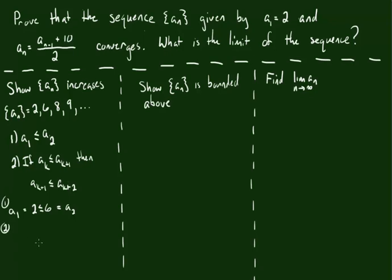So there's step 1 taken care of for us. Next up, step 2. What we're going to need to do with step 2 is we're going to need to assume that a_k is less than or equal to a_{k+1}, and then show that forces us to realize that a_{k+1} is less than or equal to a_{k+2}. So if this is true, then that is true. So first we assume that a_k is less than or equal to a_{k+1}. And that's happened in one case already — in the case of a_1 and a_2.